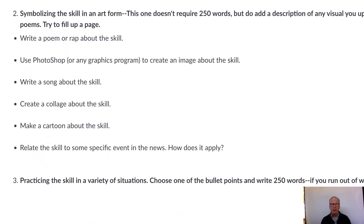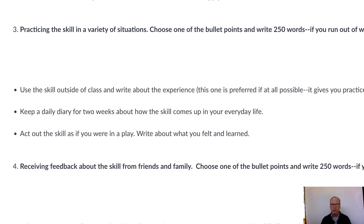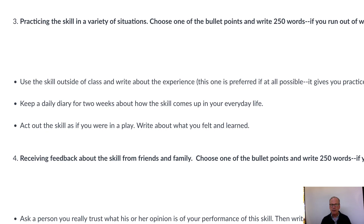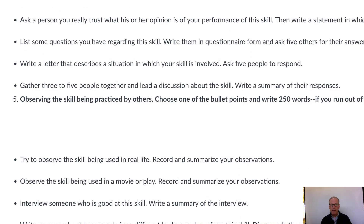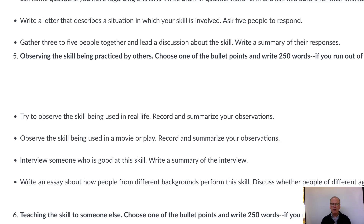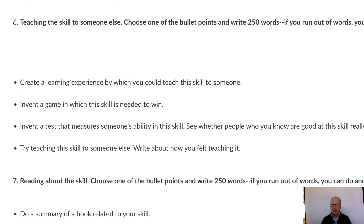Then it goes on to three, which is practicing the skill — again, you get choices. Four is receiving feedback about the skill from friends or family. Five is observing the skill being practiced by others. Six is teaching the skill to someone else. Seven is reading about the skill. And finally eight is where you reflect on the skill and write a one-page evaluation.